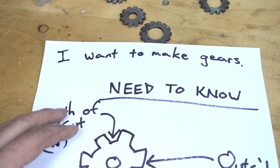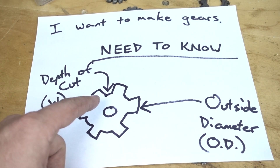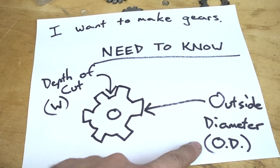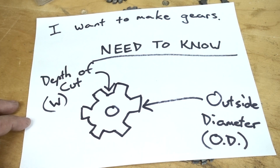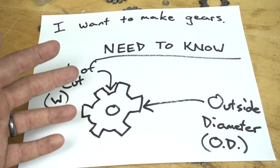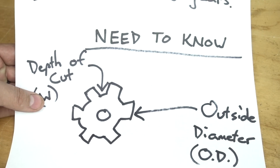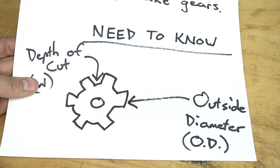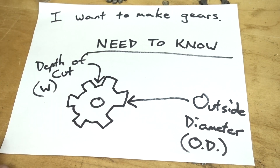I want to make gears, and I need to know two things basically. I need to know how deep to cut, and I need to know the outside diameter — because I could have a gear that's five feet in diameter and I only want it to have 45 teeth. Depth of cut and outside diameter, and how I came to solve these two things.